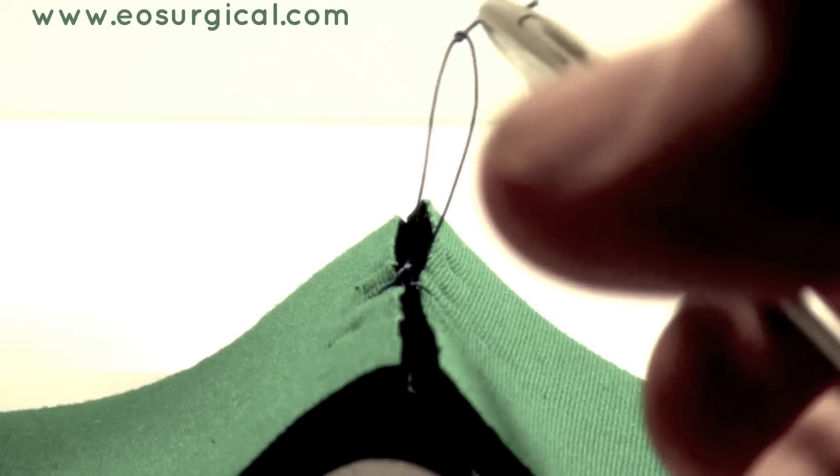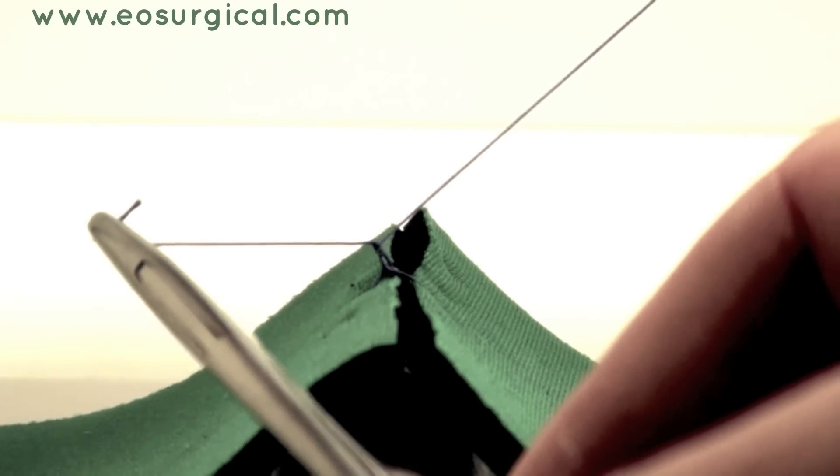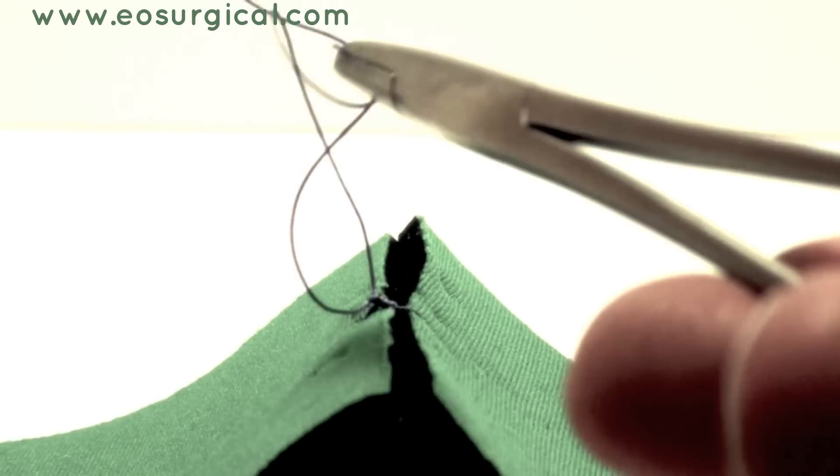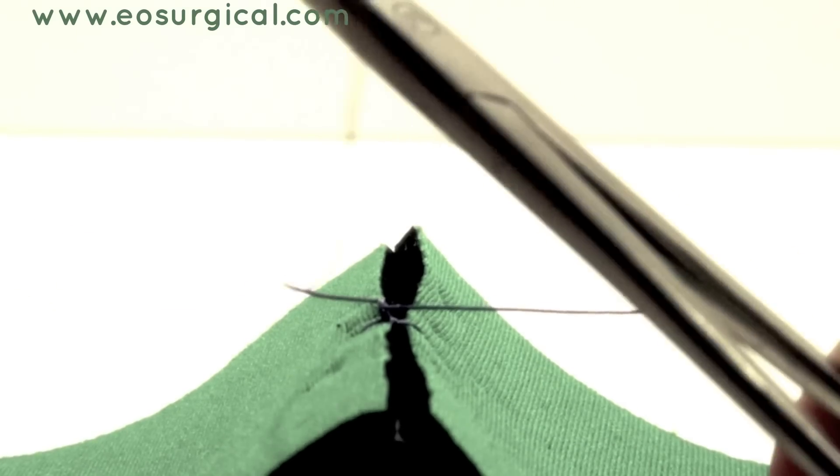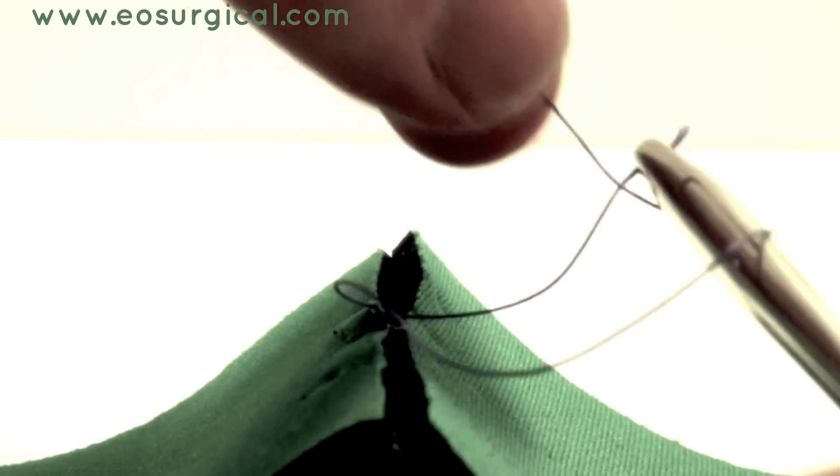The direction in which you cross your hands should reverse each time, and by doing this, you will throw square knots as shown here. Watch how the knot lies down flat as it is being tightened.